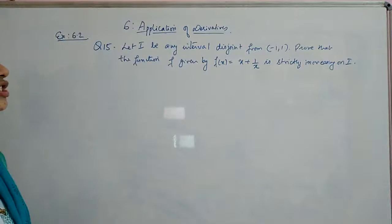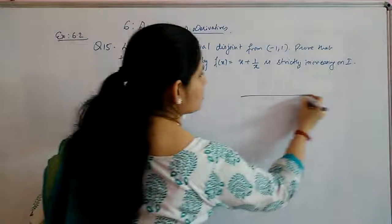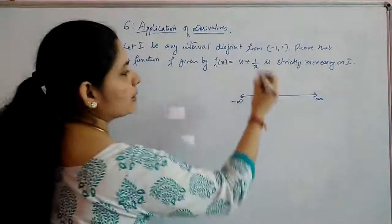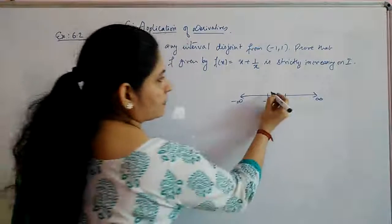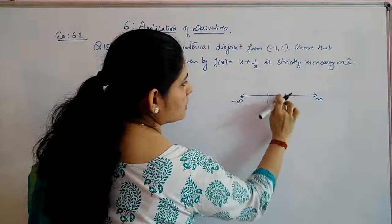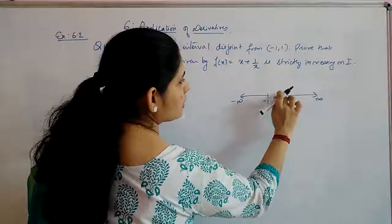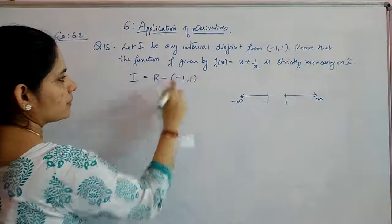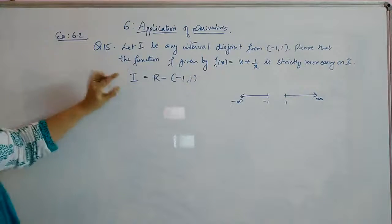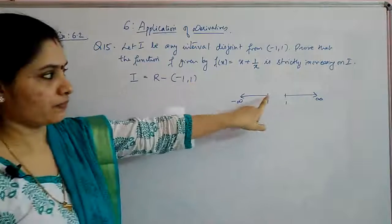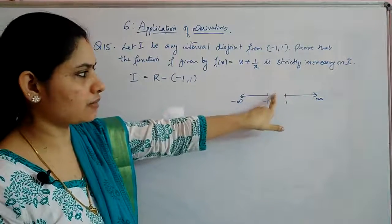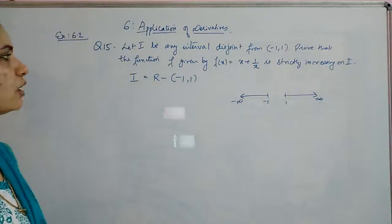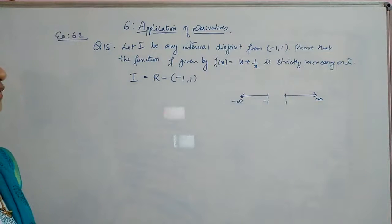Let I be any interval disjoint from the open interval (-1, 1). On the real number line, disjoint from (-1, 1) means I does not contain any values strictly between -1 and 1. So I equals the real numbers minus the open interval (-1, 1), meaning I can include -1 and 1 but not any values in between.